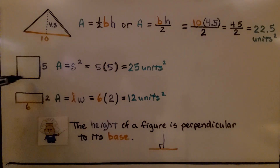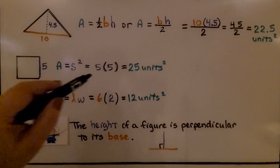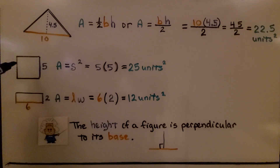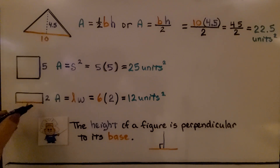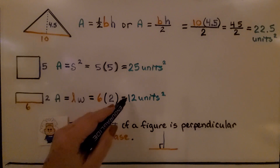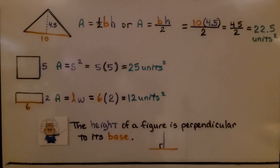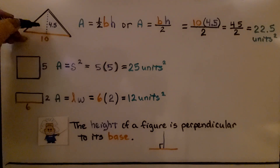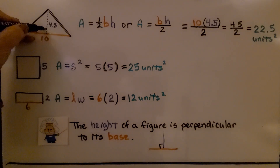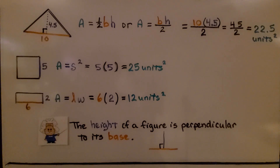Here we have a square, and all the sides are 5, so we do 5 times 5 and get 25 units squared. Here we have a rectangle — length times width, 6 times 2, that's 12 units squared. Remember, the height of a figure is perpendicular to its base, making a right angle, a 90-degree angle.